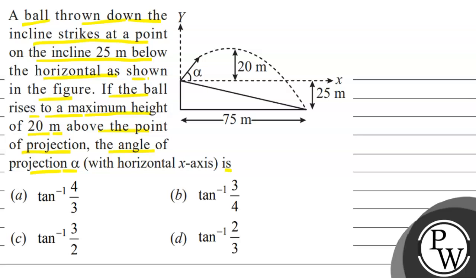So students, as you can see in the diagram, the concept we are going to use here involves calculating the maximum height attained in projectile motion. The formula we need to use is h_max = u² sin²θ / 2g.